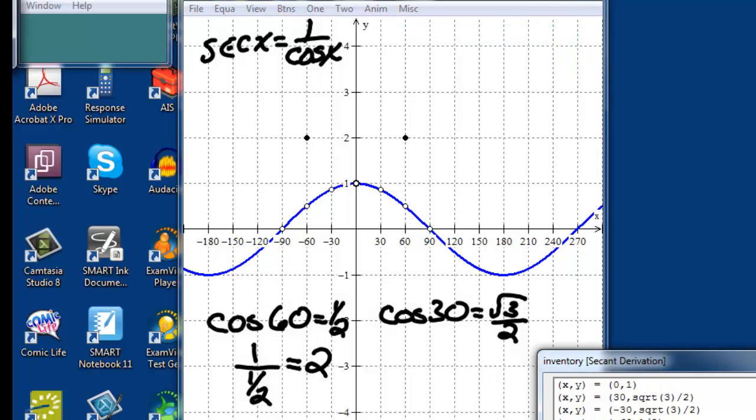So at 30 degrees, we should see 2 over the square root of 3. And there's another point.